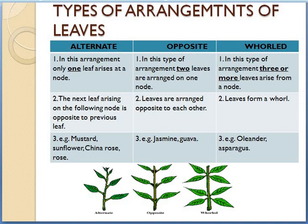There are three types of arrangement of leaves. First is alternate arrangement, second is opposite arrangement, and third is whorled arrangement. In alternate arrangement, you can see the diagram over here. In this arrangement, only one leaf arises at the node. The part from where the leaf arises is called the node. So in alternate arrangement, a single leaf arises from one single node.